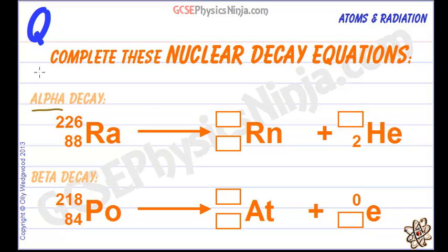Now in alpha decay we lose an alpha particle. And an alpha particle has got four particles, two protons and two neutrons. So that means that we're going to lose four from the mass number.